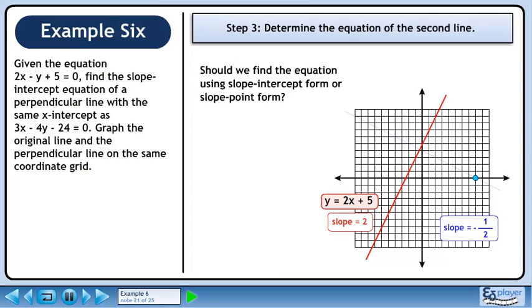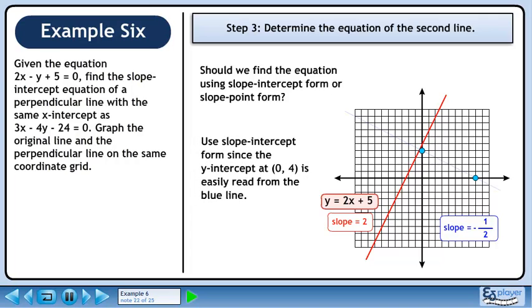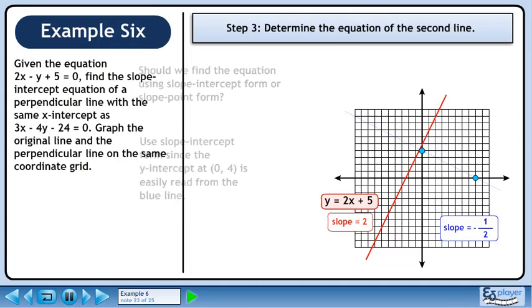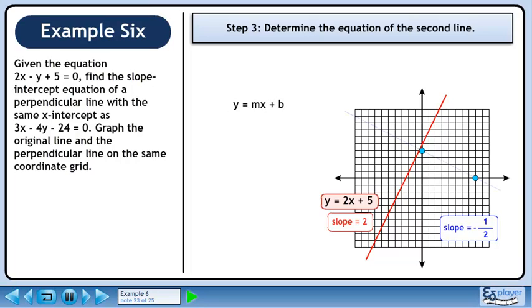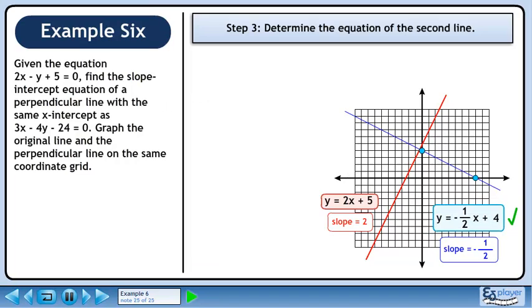Should we find the equation using slope-intercept form or slope-point form? Use slope-intercept form since the y-intercept (0, 4) is easily read from the blue line. Start with y equals mx plus b. The slope is minus 1 over 2 and the y-intercept is 4. The equation of the second line is y equals minus 1 over 2x plus 4.